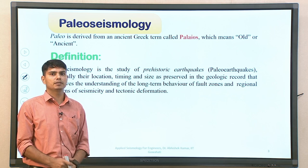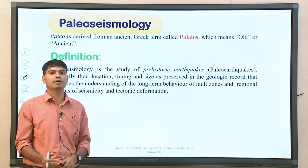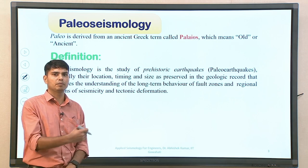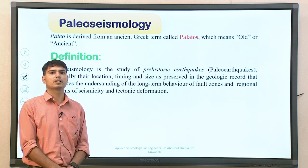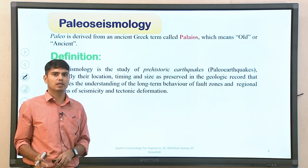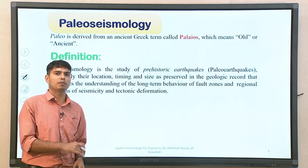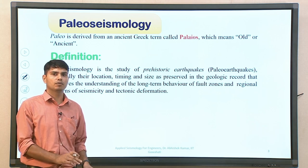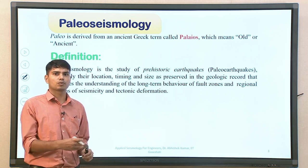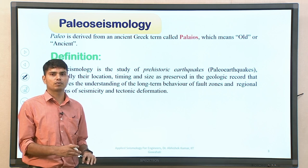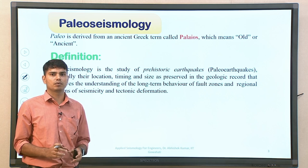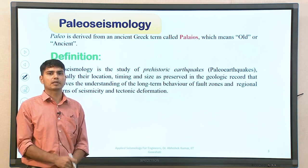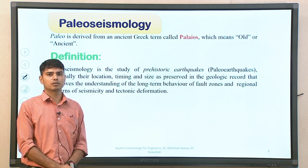In northeastern India, there are many studies which have identified prehistoric earthquakes — paleo earthquakes — that happened maybe 700 years back, 1000 years back, and more. If you take those earthquakes and compare with the earthquake catalog prepared before this information was known, you can observe a significant change in terms of seismic activity. If you use two catalogs — one without paleo earthquake information and one with recent paleo earthquake information — in seismic hazard analysis, you will see a significant change in the expected level of ground shaking, particularly in northeastern India.